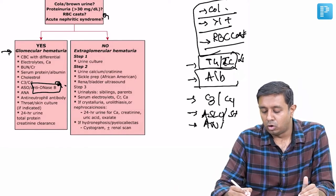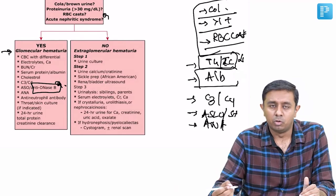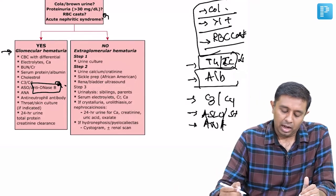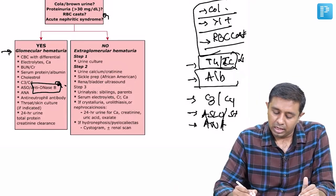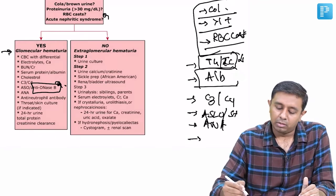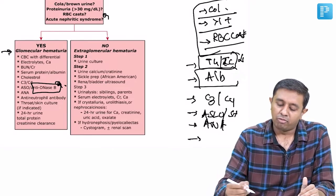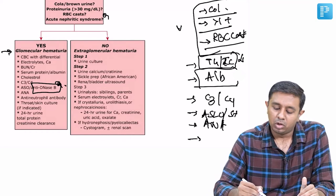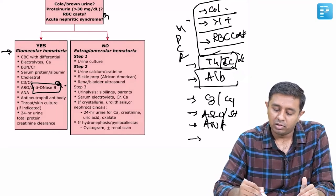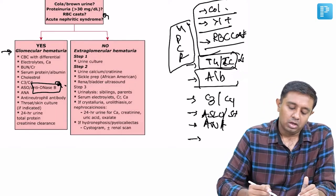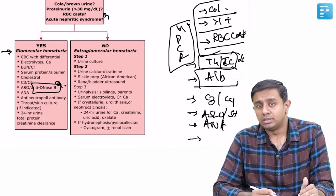ANA of course should always be in the differential because lupus can be a big masquerader. Last but not least, quantification of the amount of proteinuria - if it is more than one plus, it is urine protein creatinine ratio something that we are looking at here.